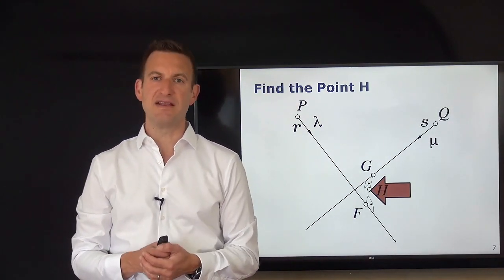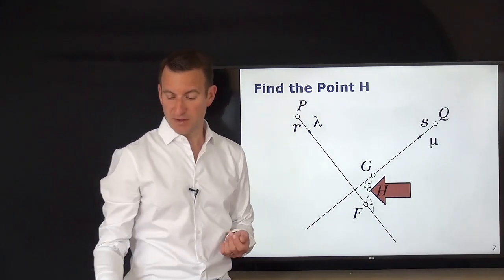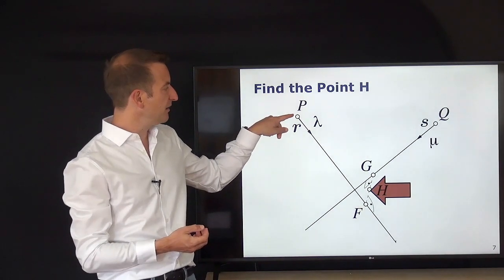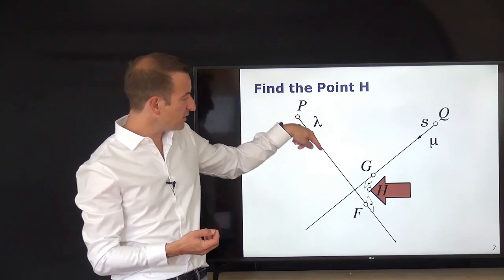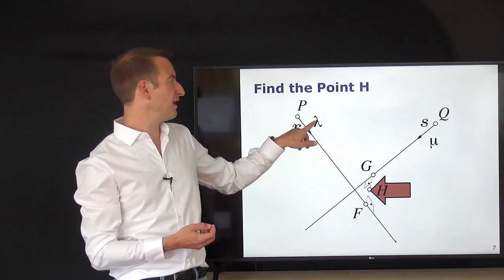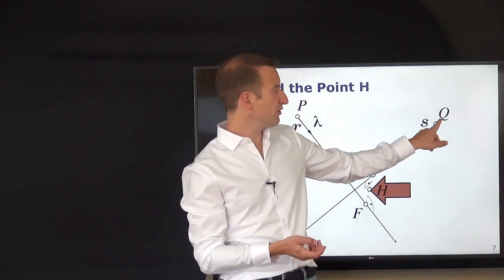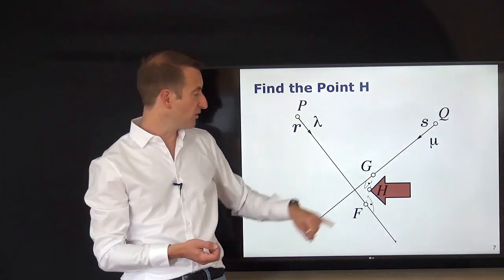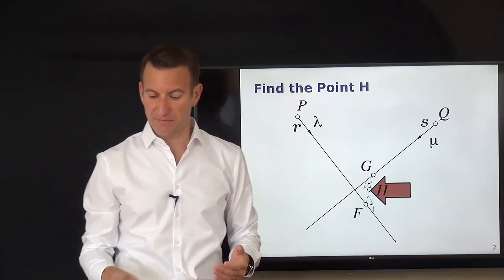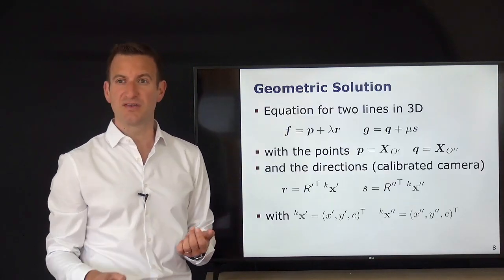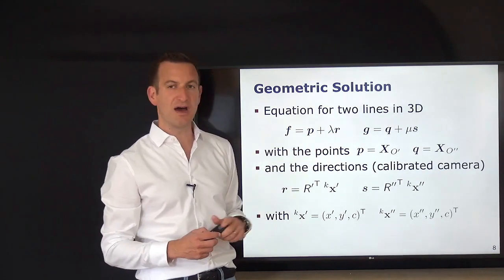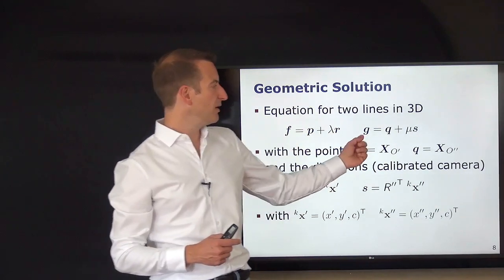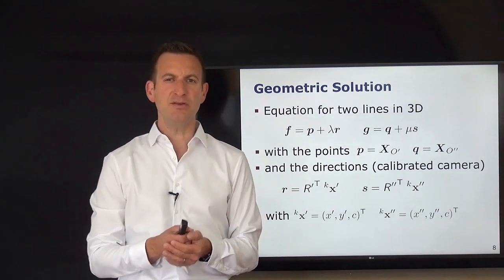To do this, we set up two equations describing straight lines in 3D. One straight line: start from point P, walk in the direction of direction vector R with scalar lambda telling how far to walk. The same on the other side: start from point Q, with direction vector S and scalar mu. So F equals P plus lambda times R, and G equals Q plus mu times S. Points P and Q are the known projection centers from our relative orientation; lambda and mu are the unknowns.